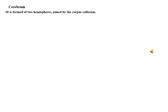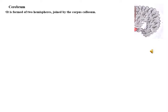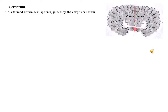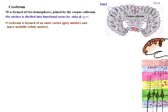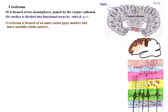The cerebrum is formed of two cerebral hemispheres joined together by the corpus callosum. Its surface is divided into functional areas by sulci and gyri. The cerebrum is formed of an outer cortex of gray matter and inner medulla of white matter.